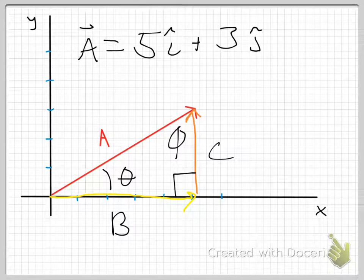Okay, so in a previous video, we covered decomposing the vector A into a vector that lies along the x-axis, vector B, and a vector that lies parallel to the y-axis, vector C.